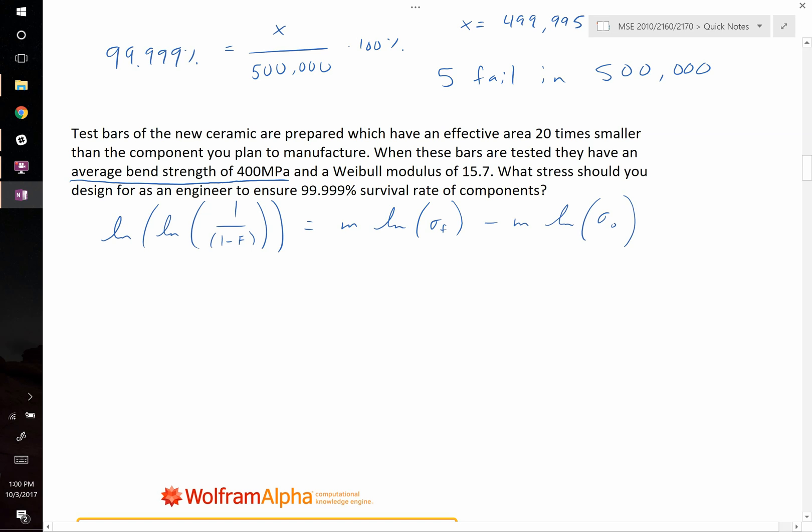In this question, we want to figure out the stress at which something is failing. We can calculate F from our failure rate and we know Weibull modulus. What we don't know is this characteristic strength, but they do give us some information that allows us to calculate it. We are told that the average stress, the average bend strength is 400 MPa. Well, average implies something.